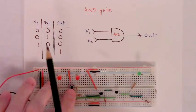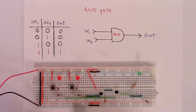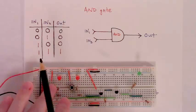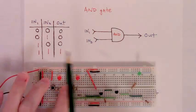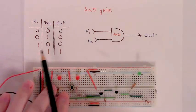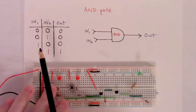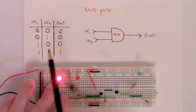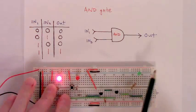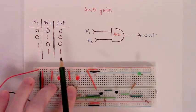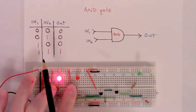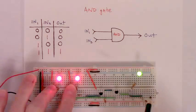We can have the first scenario: both inputs are low, the output's low. The second scenario: first input's low, the second input's high, the output's low. The third scenario: input one is high, input two is low, and the output's low. Or we can have the final case in which input one is high, input two is high, and in fact the output is high.